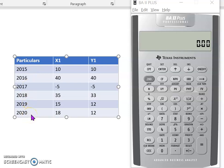I'm going to use a financial calculator, and for instruction I'm using the Texas Instruments BA2+. Notice that I have corresponding returns for X1 and Y1. So in 2015, the returns for X1 is 10% and Y1 was also 10%. Similarly, it moves on till 2020.